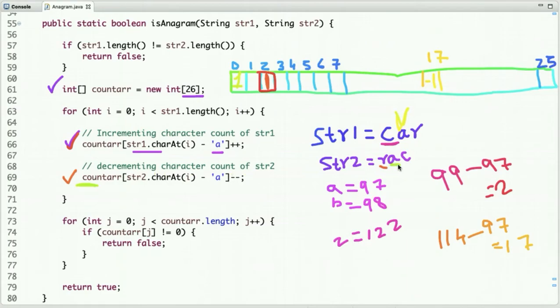Let's move to this line. The second character in string 2 is 'a', so we need to decrement the value at index 0, so now it's 0.